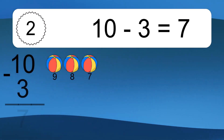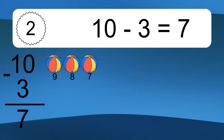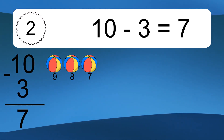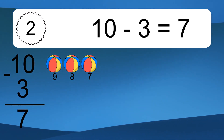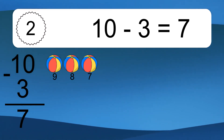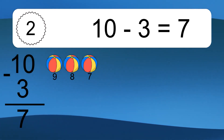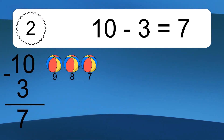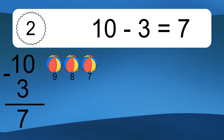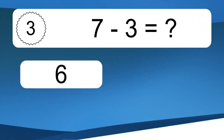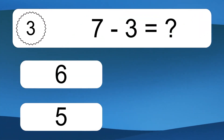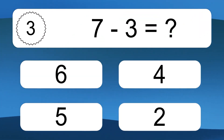10 minus 3 equals what? 10 minus 3 equals 7. Let's count it. 9, 8, 7.